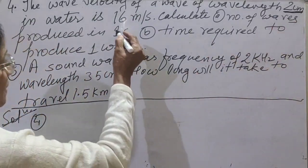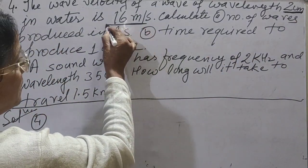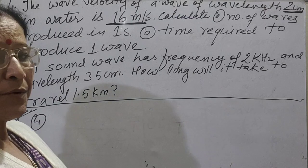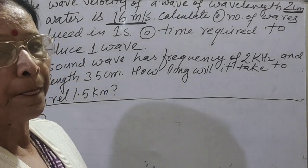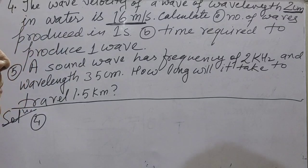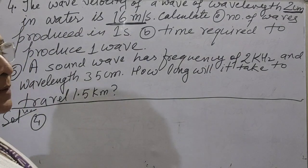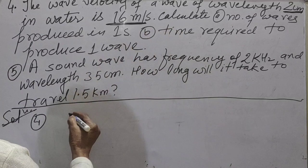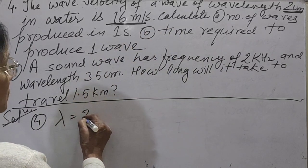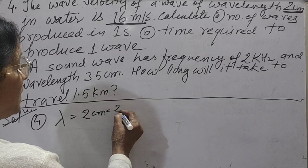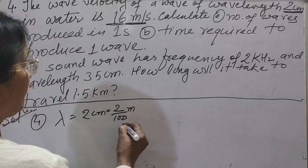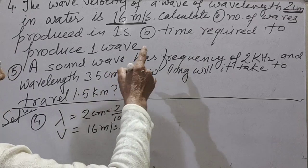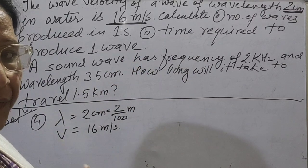Next question: wavelength is 2 centimeter and wave velocity is 16 meter per second. We have to find the number of waves produced in 1 second — that is, the frequency — and the time required to produce one wave, which is the time period. Wavelength lambda is given as 2 cm, that is 2 by 100 meter, and wave velocity is 16 meter per second. From this formula we can calculate frequency easily.